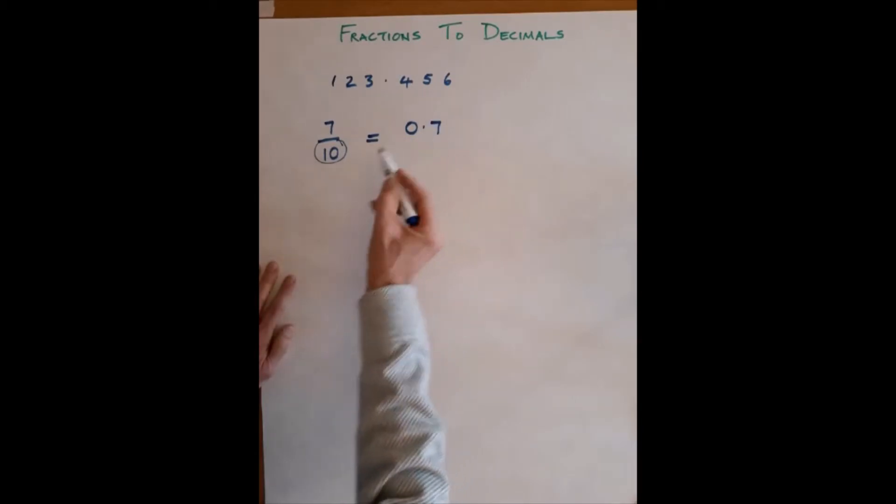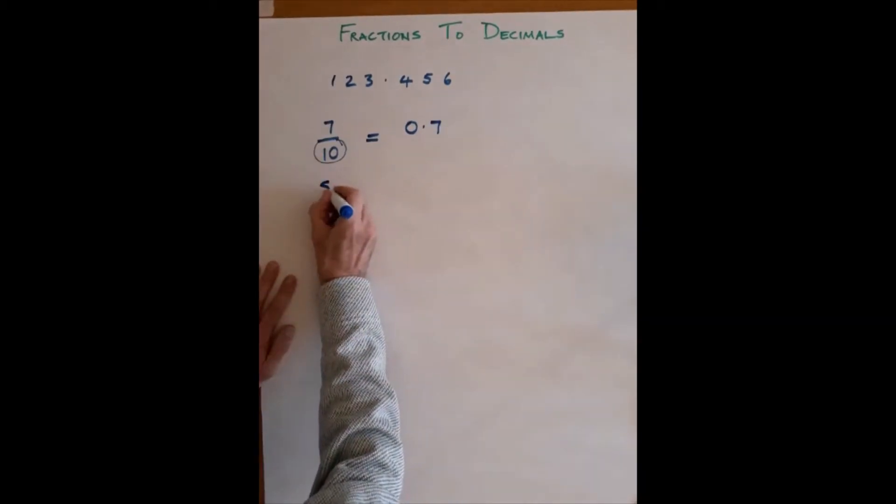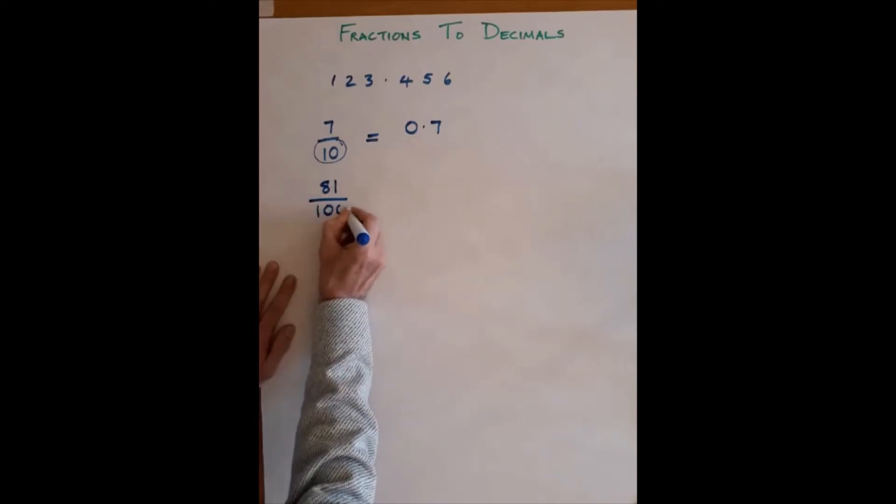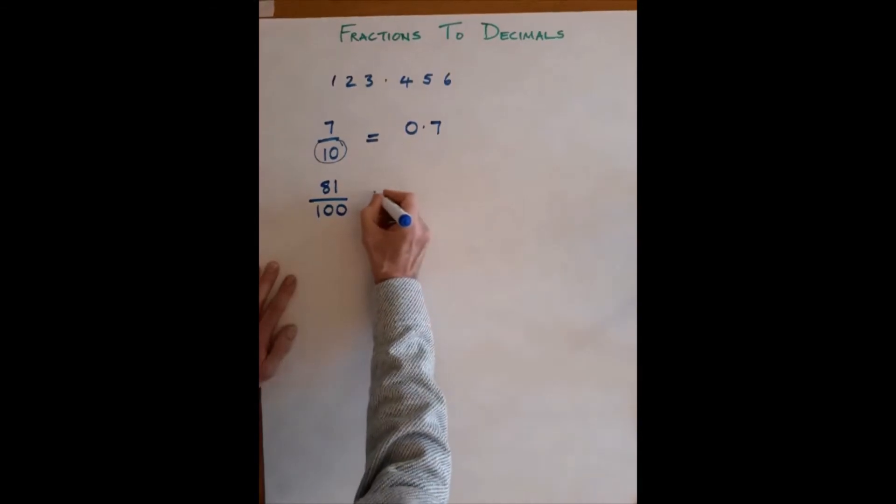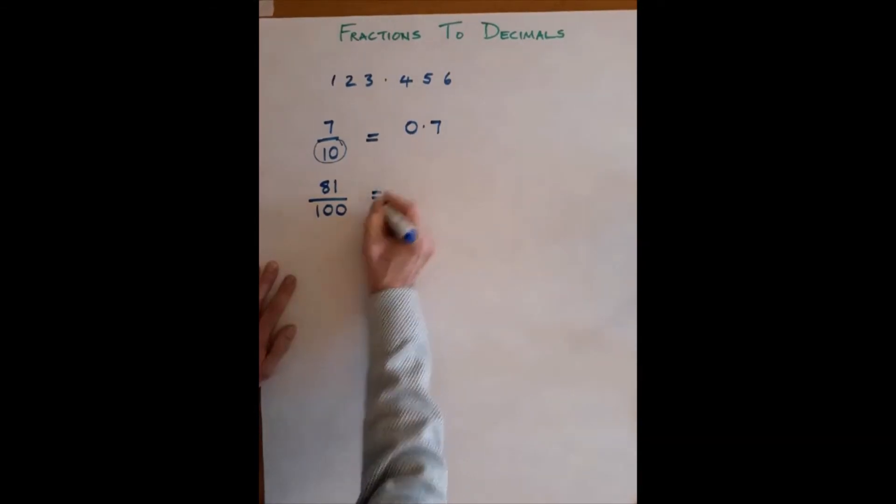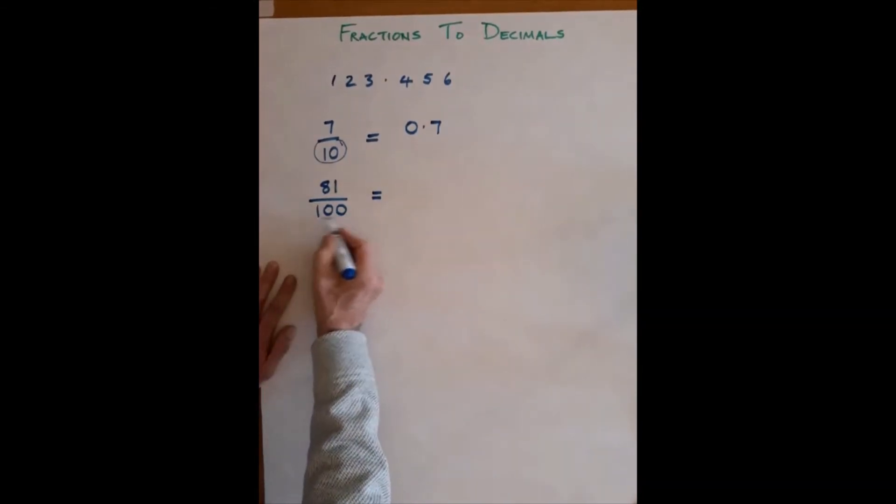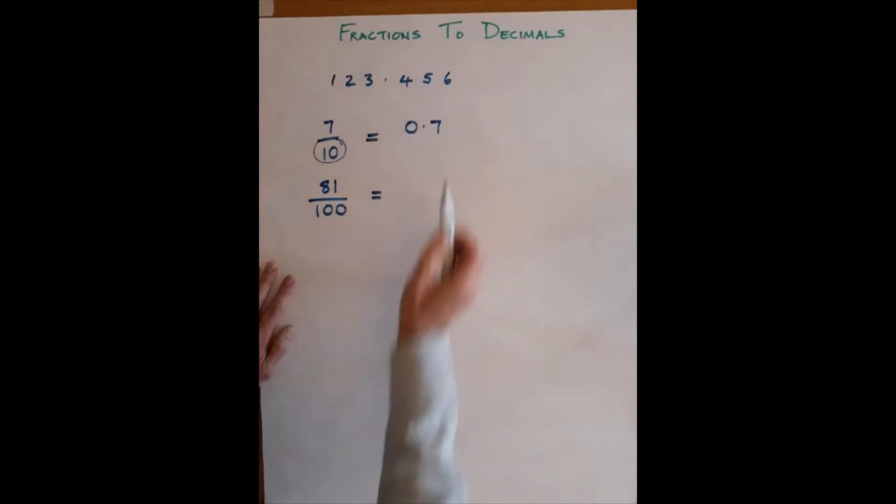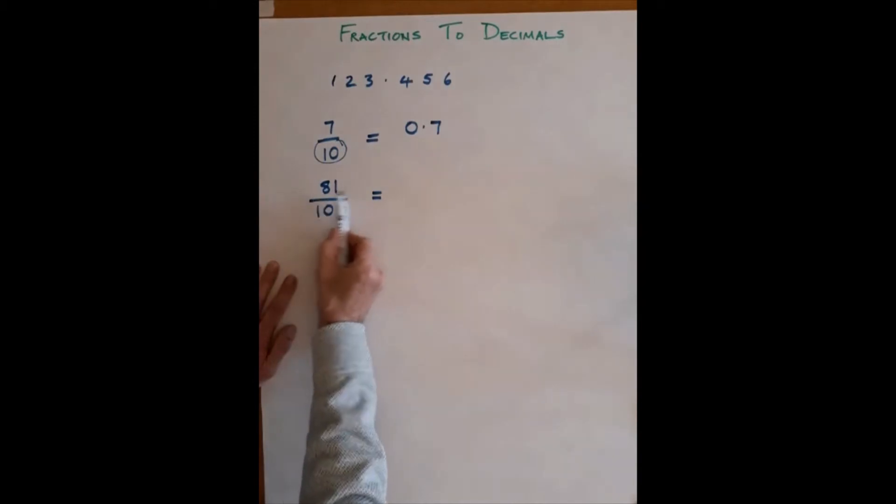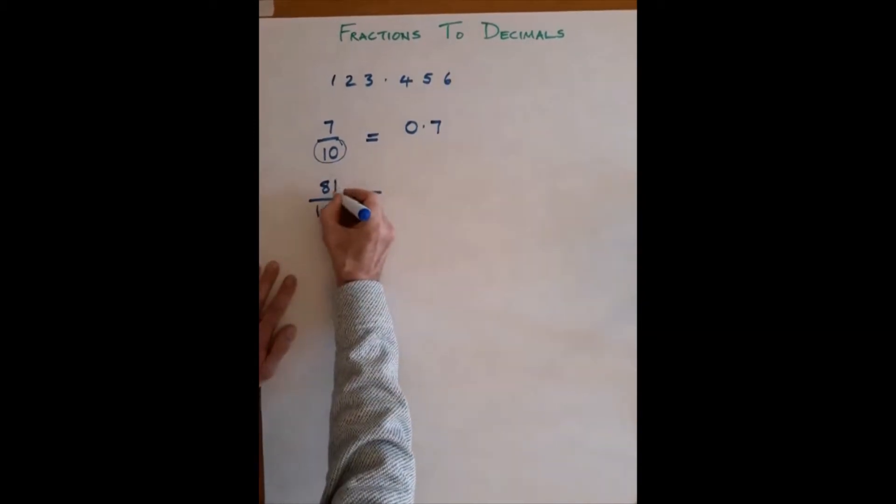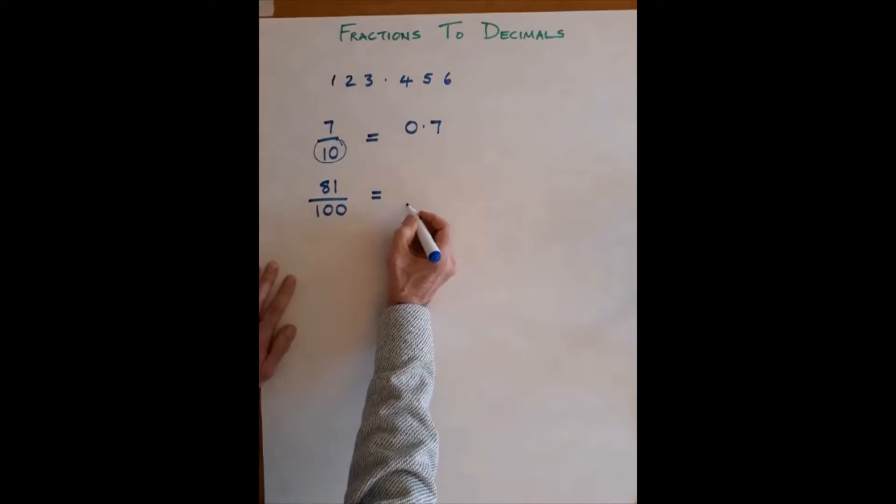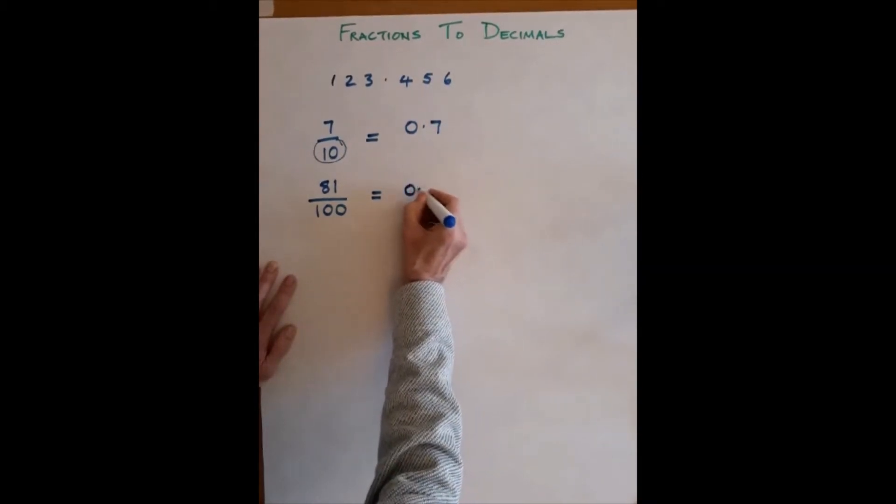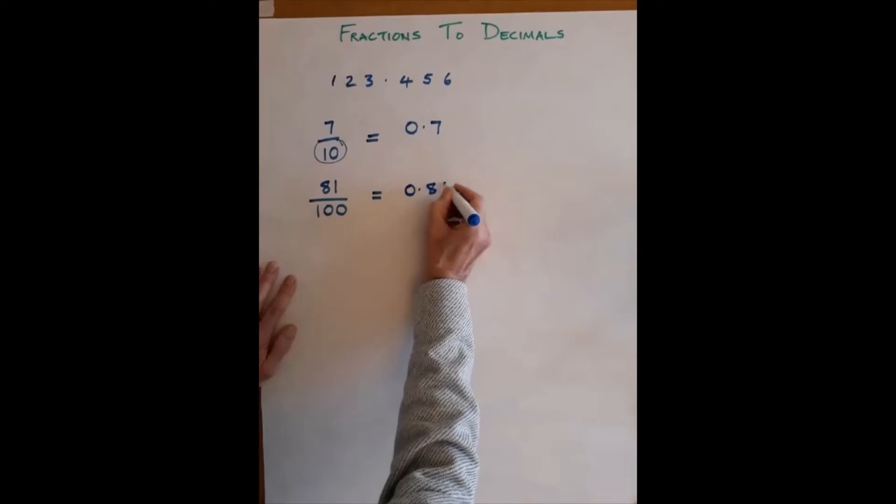Let's pick off a different example: 81 over 100. Same scenario, we're looking at hundreds, so we're going to be working on that column where our smallest digit is going to go. So 81, the smallest digit here, the one on the right, is going to go in the hundredths column. So this is 0.81.